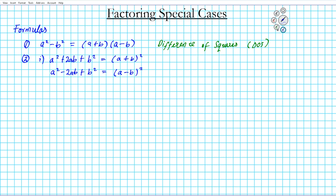These two formulas are known as your perfect square trinomials — your PSTs.